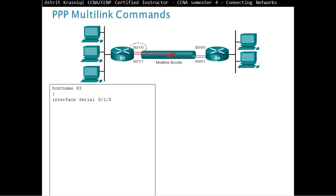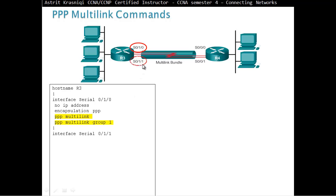First, we need to access the Serial Link — Interface S0/1/0 — and in there, don't give it an IP address, but enable PPP with encapsulation PPP, enable Multi Link, and tell it what group it belongs to — Group 1. We do the same for the second Serial Interface: no IP address, enable PPP with encapsulation PPP, enable PPP Multi Link, and assign it to the same group.